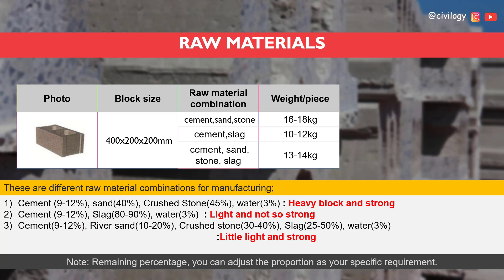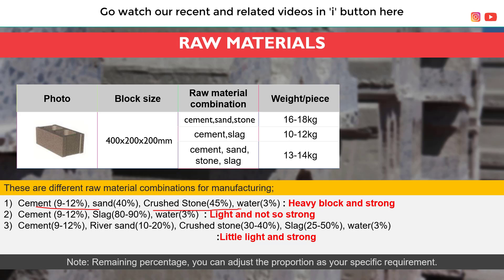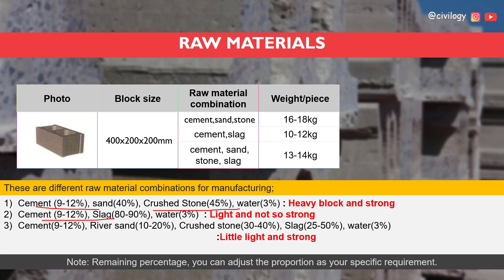Next we talk about raw materials used for manufacturing hollow blocks. We can use three combinations. The first combination is: cement 9–12%, sand 40%, crushed stone 45%, water 3% — with this we get a heavy and strong block. The second combination is: cement 9–12%, slag 80–90%, water 3% — this gives a light and not so strong material. The third combination is: cement 9–12%, river sand 10–20%, crushed stone 30–40%, slag 25–50%, and water 3% — this gives a light yet strong material.